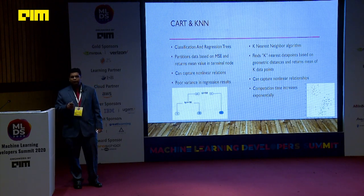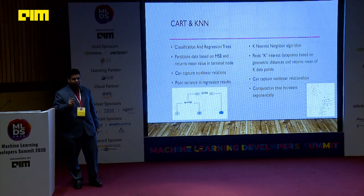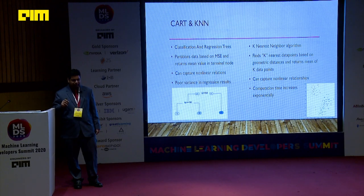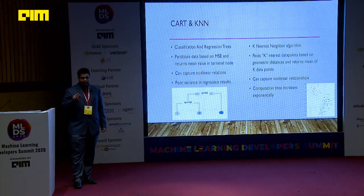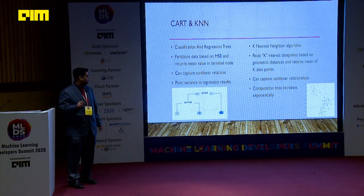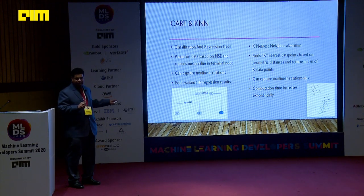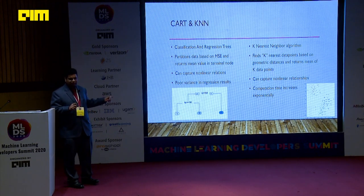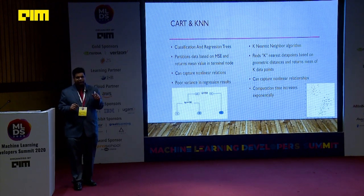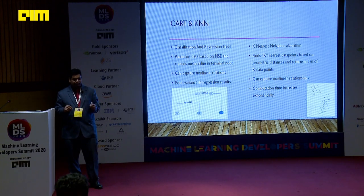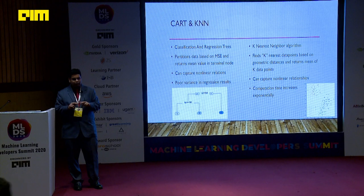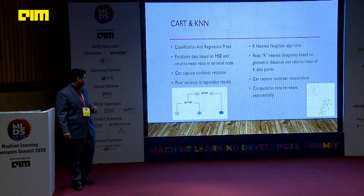The catch with CART is that, while it's a good algorithm, it has poor variance in regression results. If you are using a training data set of a thousand points, the maximum number of different predictions you can get is the number of distinct values present in your training data — because essentially it gives you the mean of the terminal node. Even if you overfit to the level where your terminal node is a single data point, you will have very limited variance.